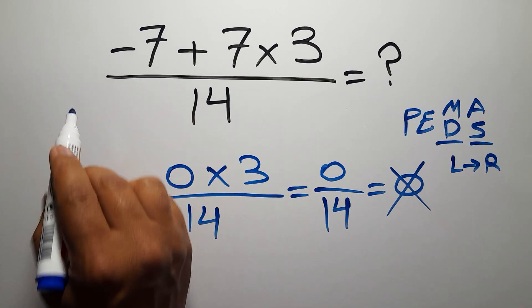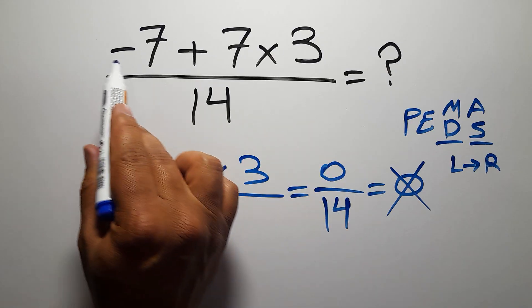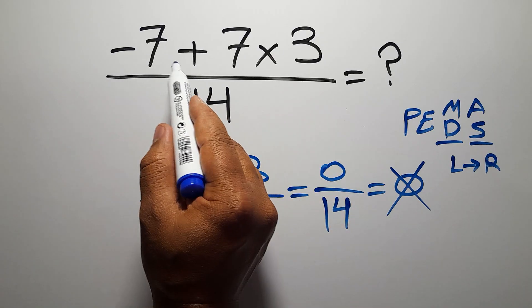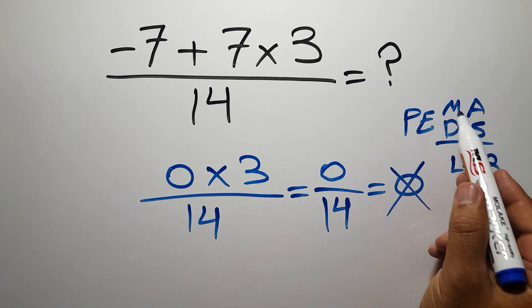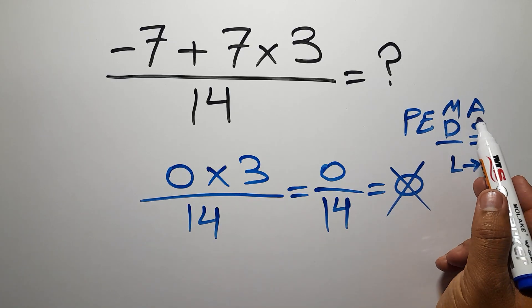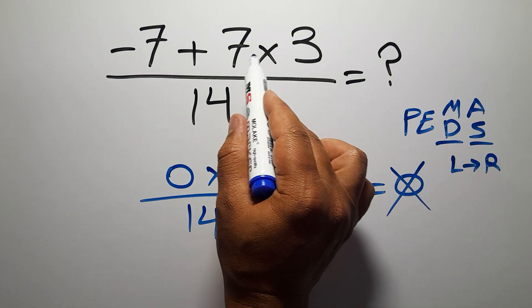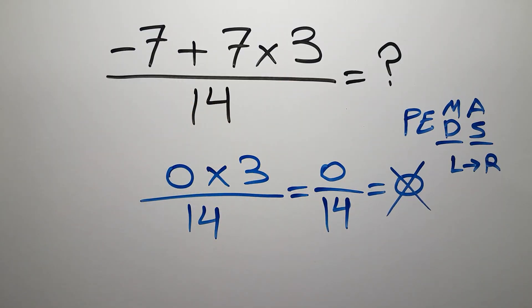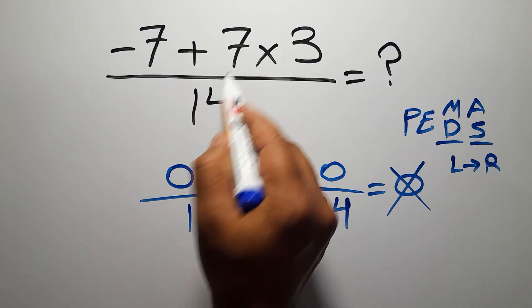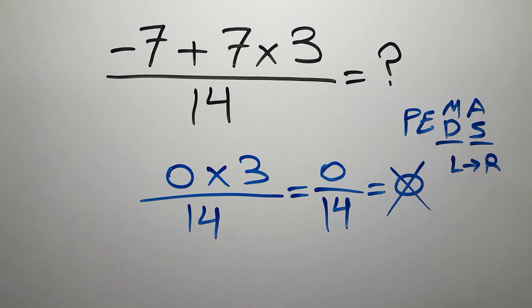Here in the numerator we have one addition and one multiplication. In PEMDAS, multiplication comes before addition, so first we have to do this multiplication, not this addition. If you do this addition before this multiplication, it is wrong.